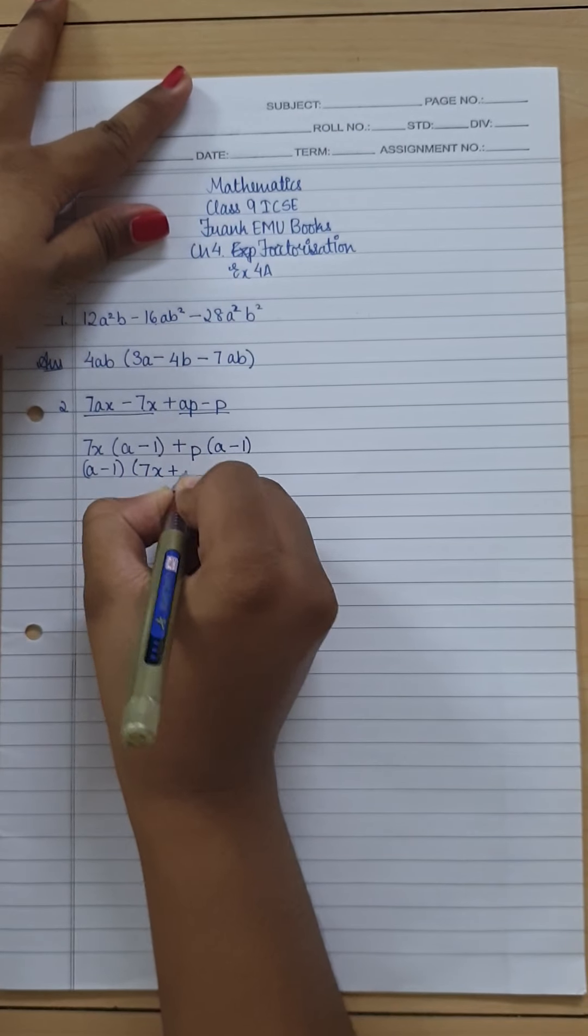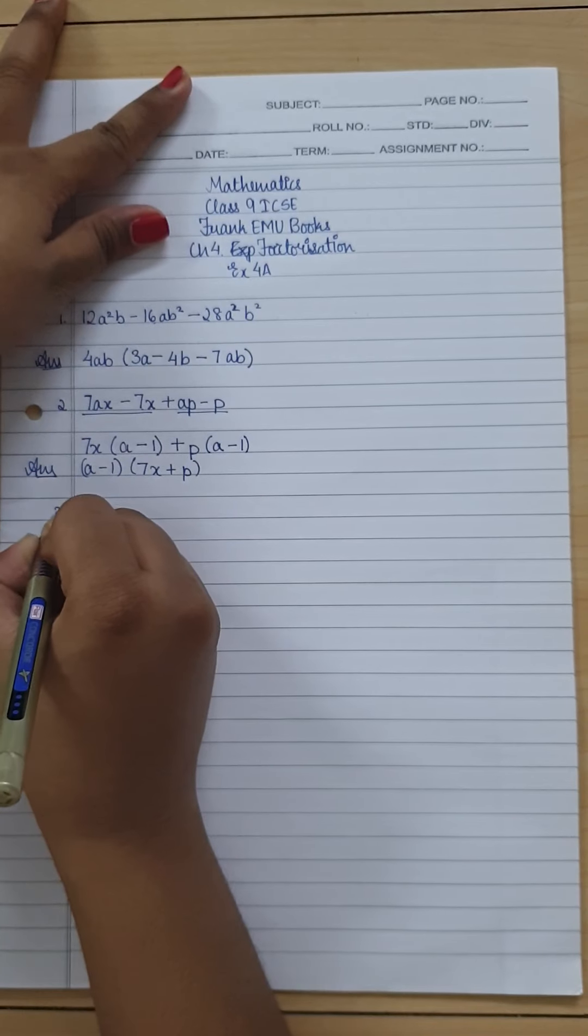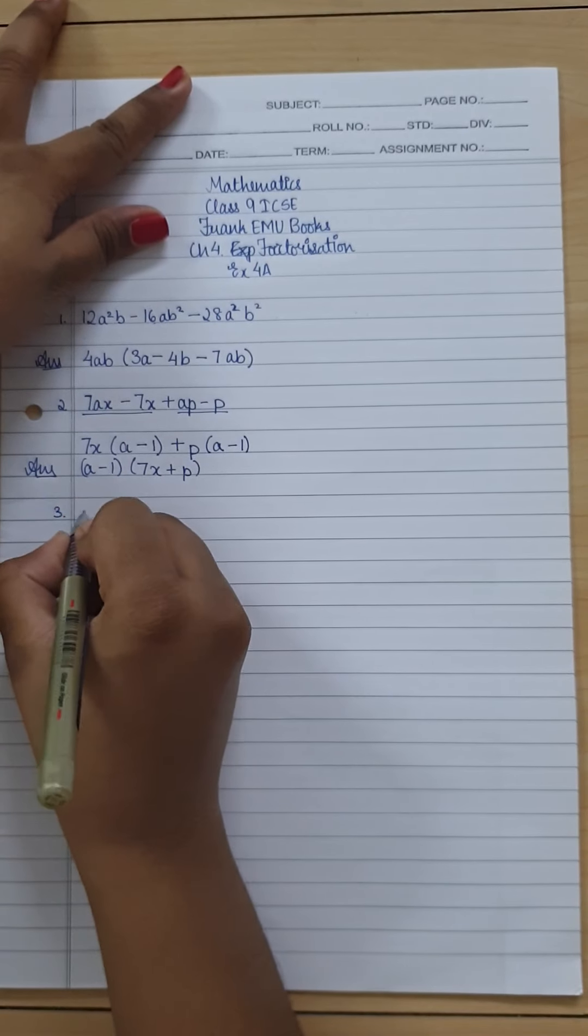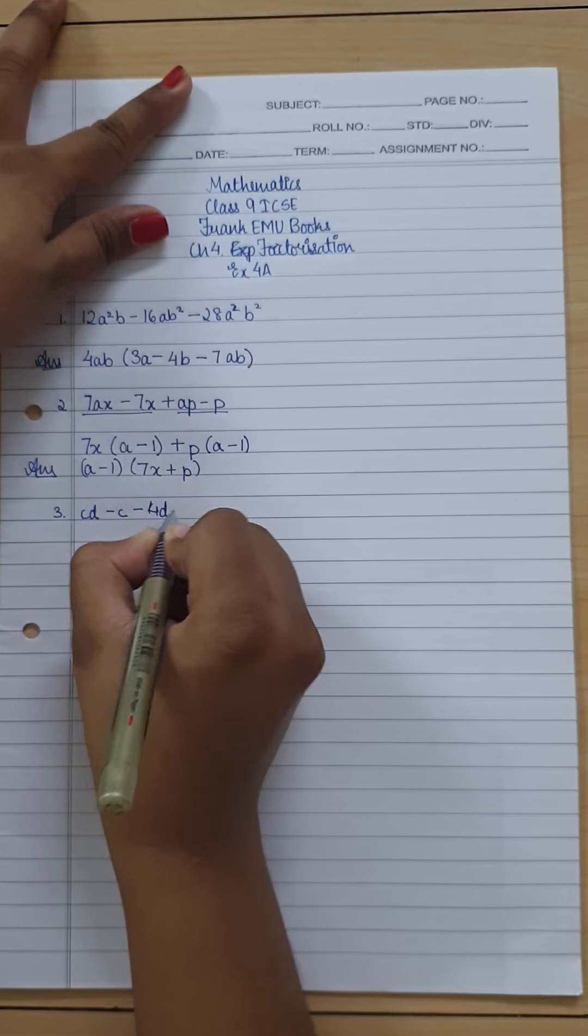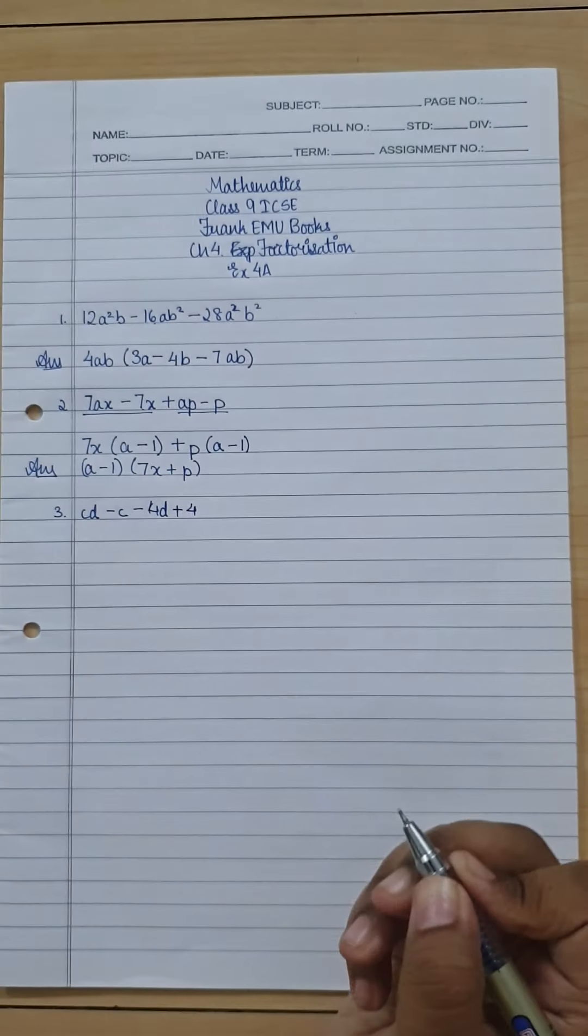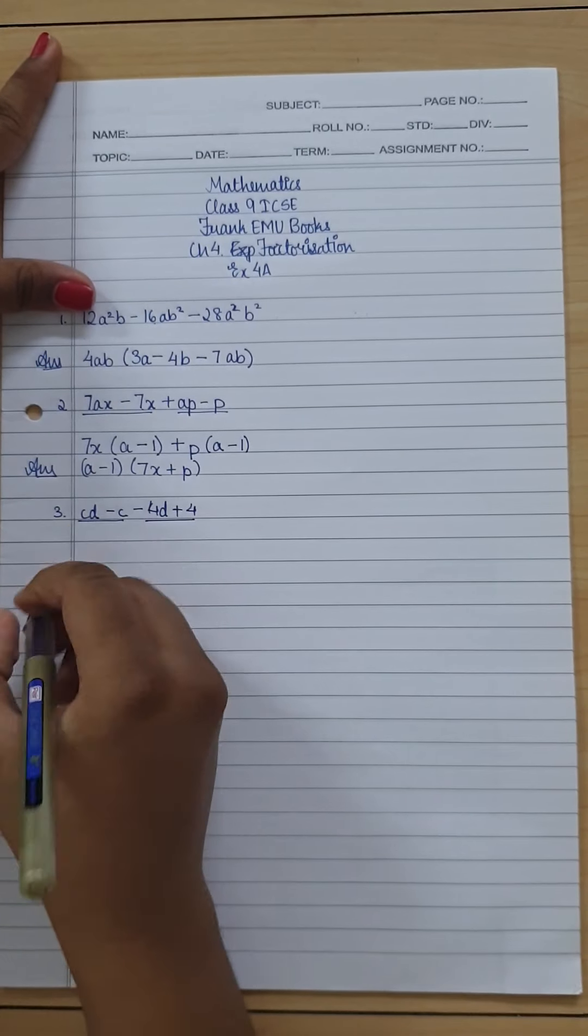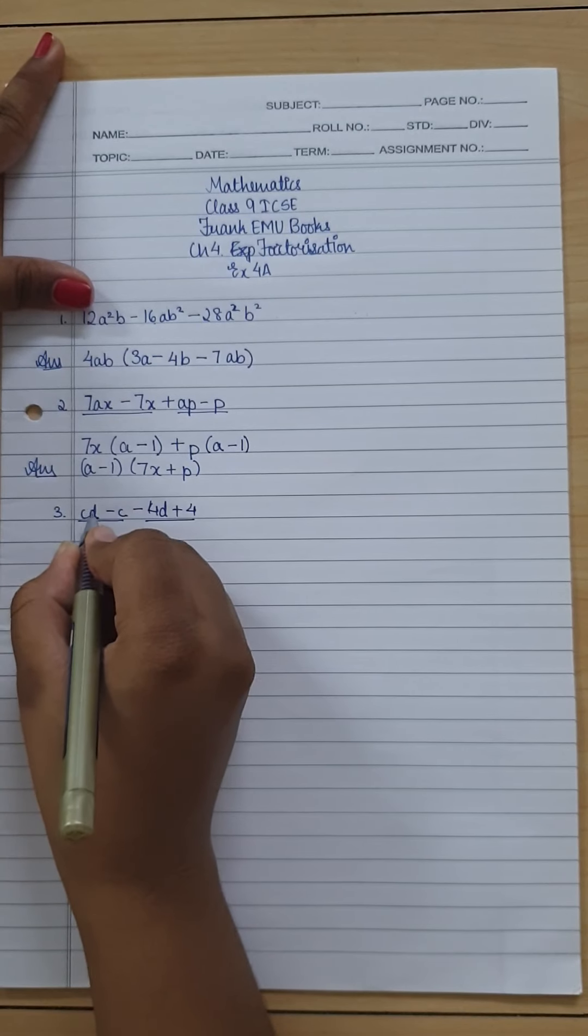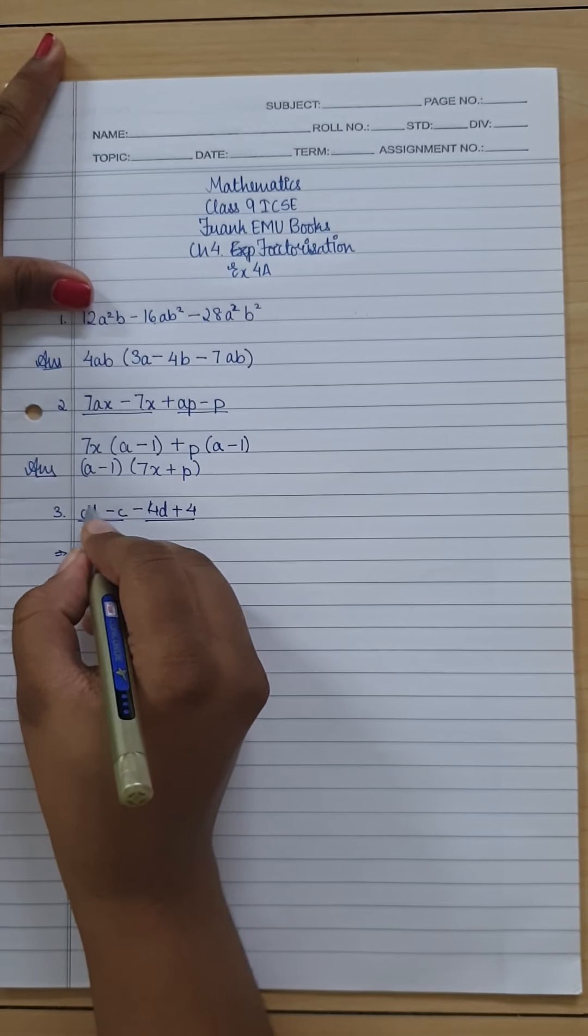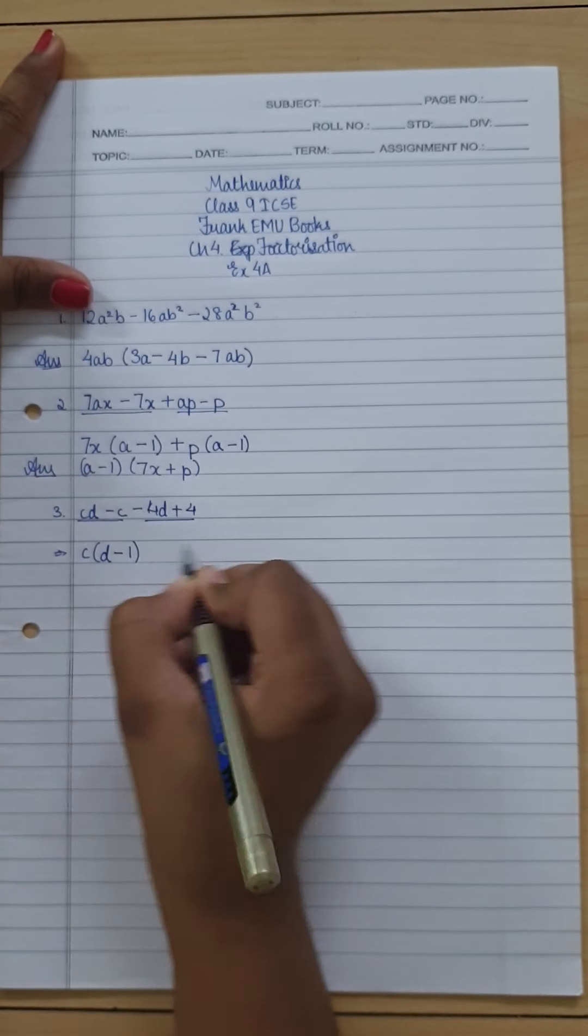Moving on to the third question, it is cd - c - 4d + 4. So again it's very simple to club these terms, it's again the first and second and third and fourth. So again c is common, so I'll take c, and d is missing because d is the term more than c, so I just write d - 1.